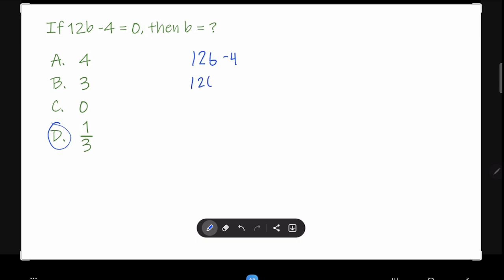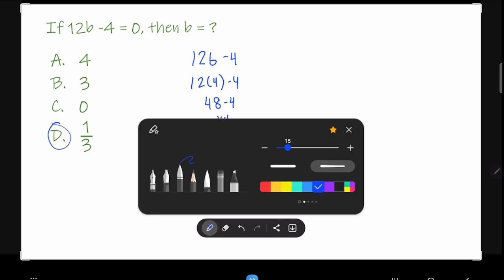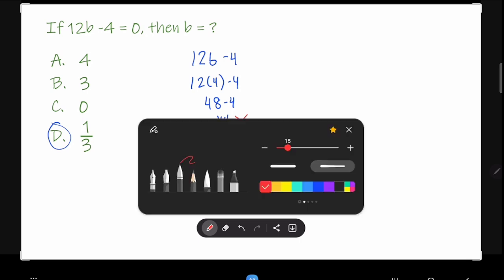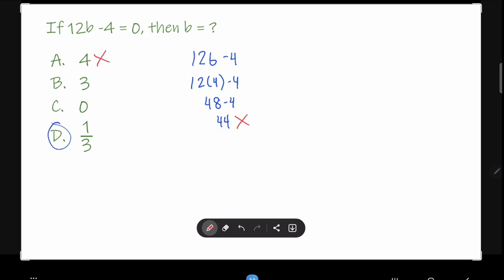It will be 12 times 4, which is 48, and then 48 minus 4 is 44, which is not equal to 0. So that means this is not part of the answer.